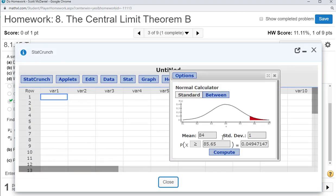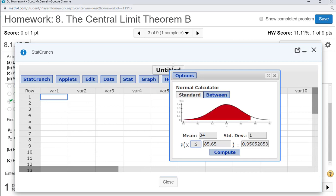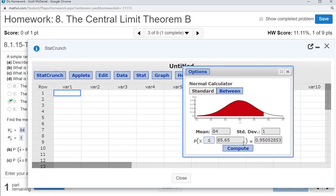Let's check this on StatCrunch. We're saying less than 81.7. We get the same thing, 0.0107.